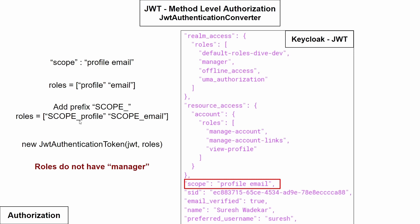So if you are trying to access any REST API which requires the manager role, it fails. Since we cannot use this default JwtAuthenticationConverter, we need to write our own authentication converter. We'll see how to do that with a demonstration in the next video. Thanks for watching.